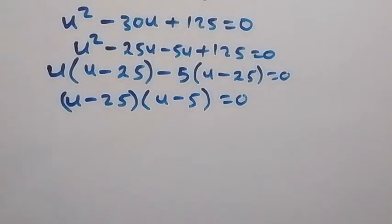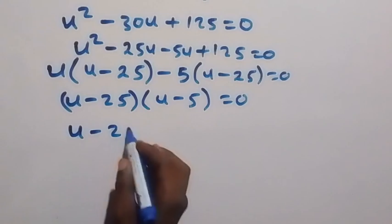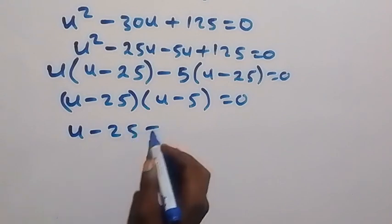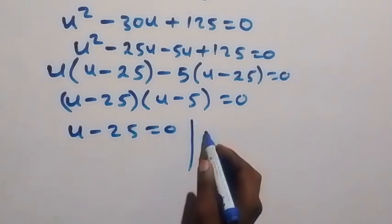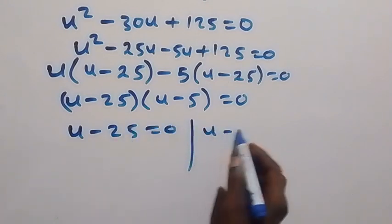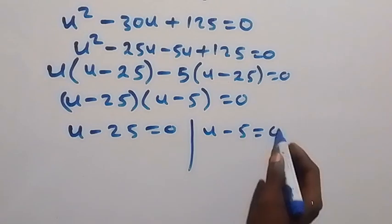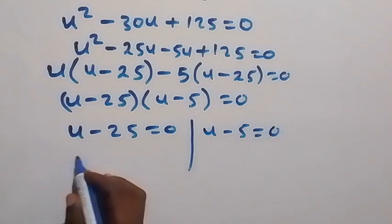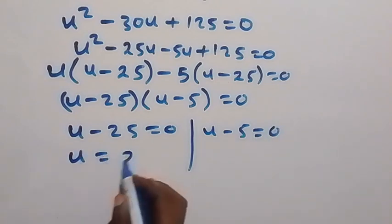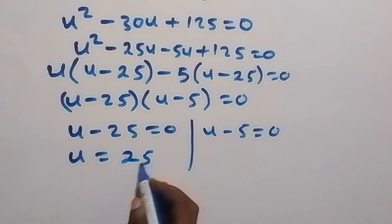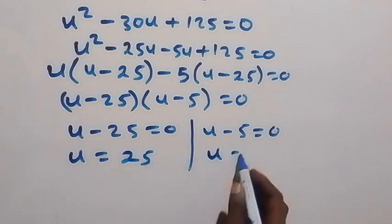We now have two possible cases: u minus 25 equals zero, or u minus 5 equals zero. From these, u equals 25 or u equals 5.